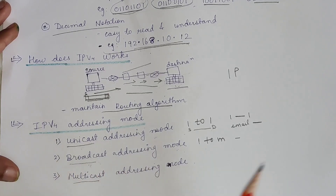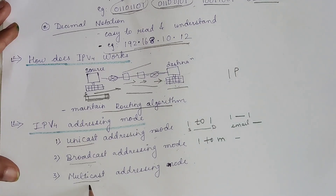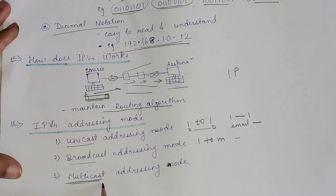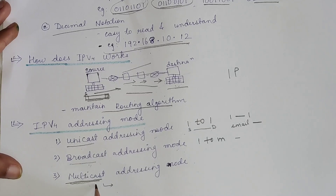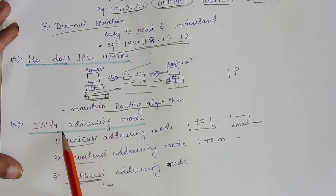In multicasting, it is similar to broadcasting, but only the people who are willing to receive the data get it. If you are not willing to watch, like with subscribers, you will not receive the data. Only if you are interested and join that particular group will you receive the data. This is how the addressing modes work for IPv4.